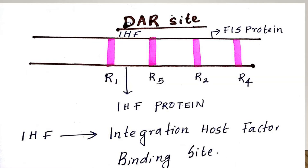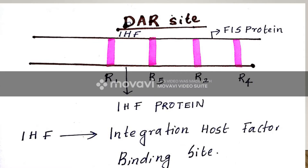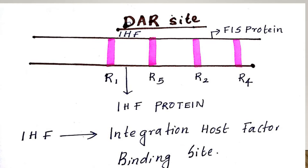When the IHF protein binds to the IHF site, it enhances replication. But the FIS protein negatively regulates the DNA replication process. However, when both the FIS protein and IHF protein are combined together, they enhance the replication process.